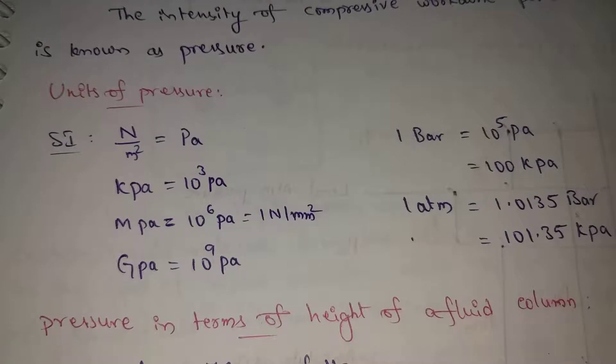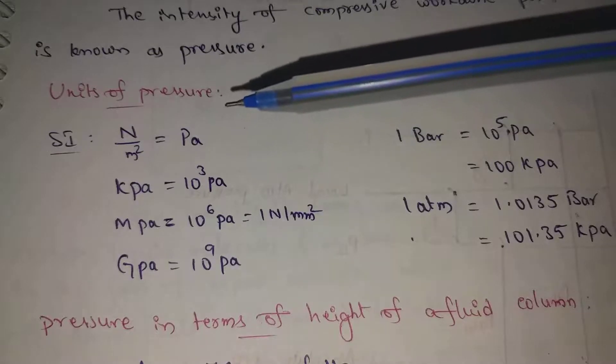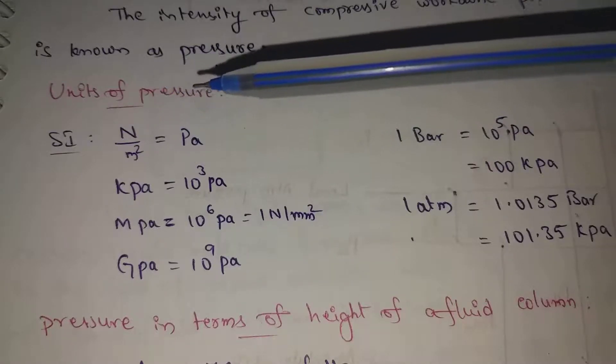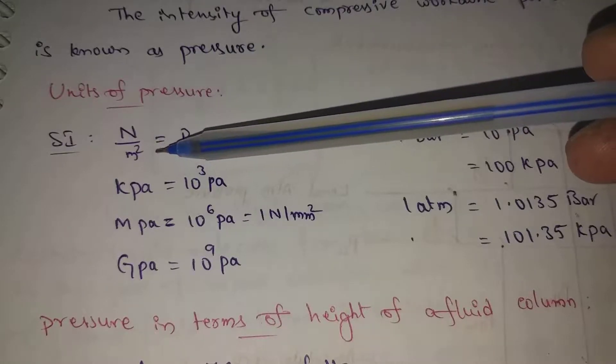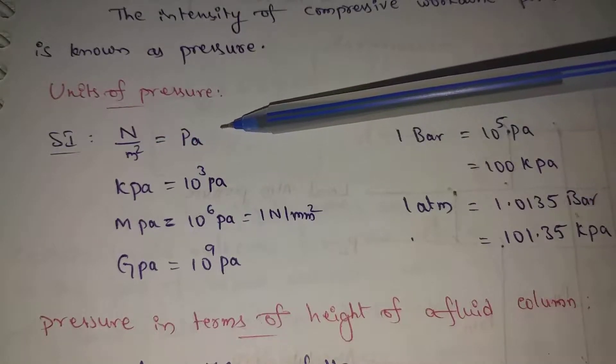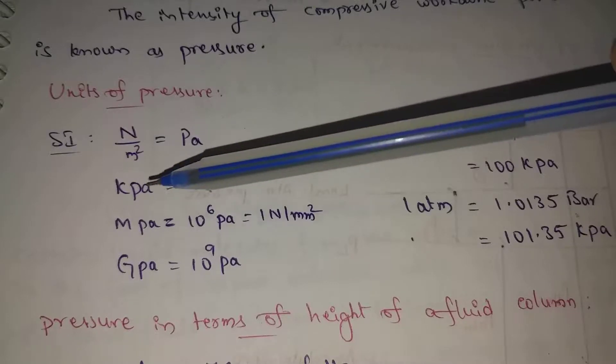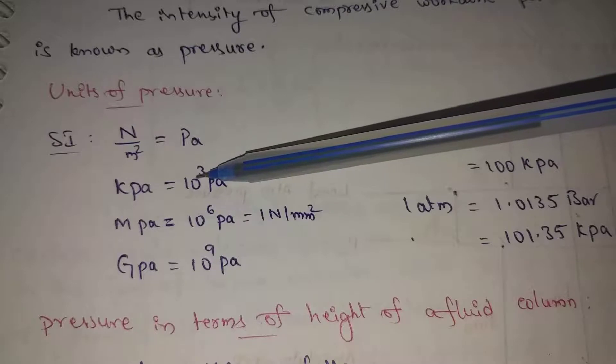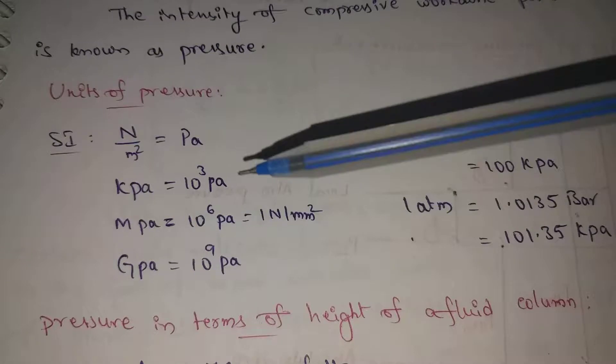Units of pressure is newton per meter square. As we already discussed, pressure equals normal force by area. Force is newton per meter square, which is 1 Pascal. Newton per meter square equals Pascal. Then kilopascal. Kilopascal equals 10 cube Pascal. Kilo means 10 cube.